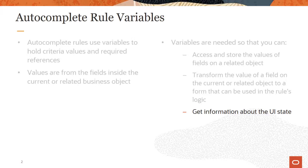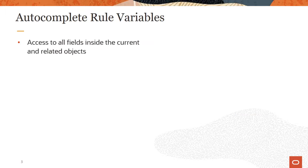Get information about the UI state such as the role of the logged in user or if a given field has been modified. You use a function to get these values. You have access to all fields inside the current and related objects.